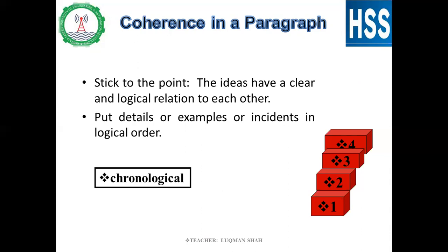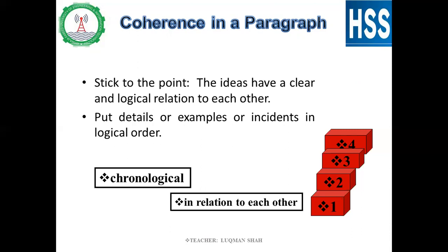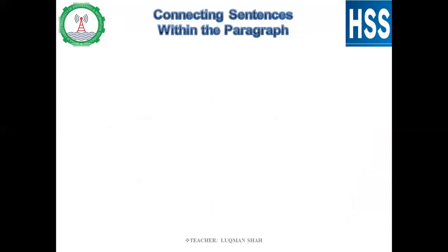When all the sentences are contributing towards the main idea, that is called unity. Coherence can be achieved through chronological order, in relation to each other, or in order of importance. The connecting of sentences within the paragraph creates a sort of coherence.